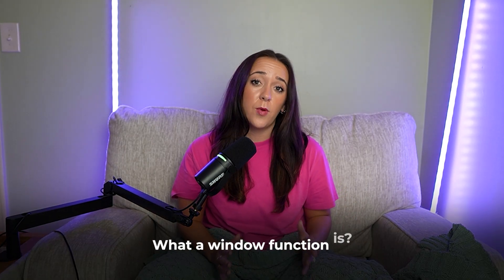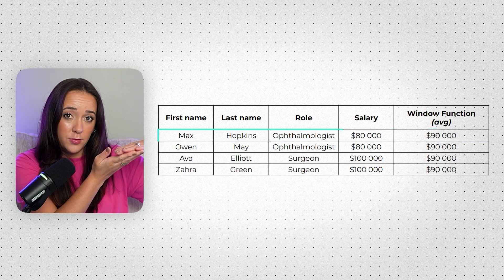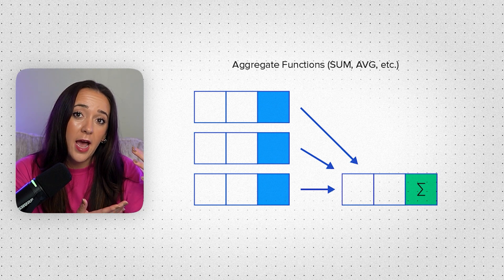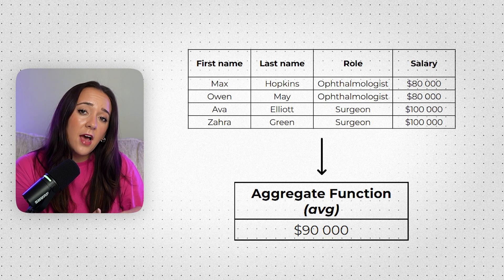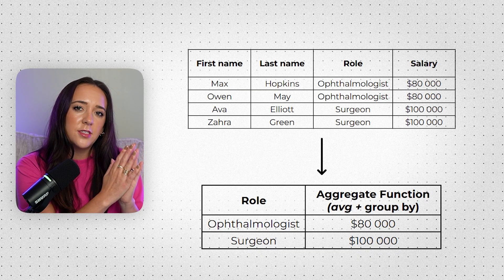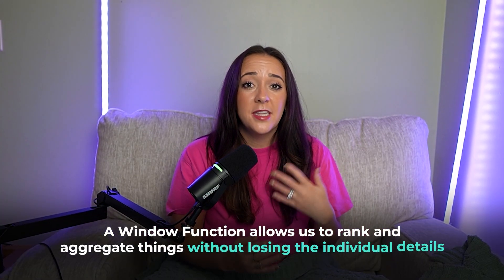Before we get to coding, let's learn what a window function is. A window function in SQL lets you do a calculation across a set of rows related to the current row without collapsing all the rows into one result. Think about aggregate functions in SQL — when we use SUM or AVERAGE, it aggregates all the rows into one output. Even with GROUP BY, we get one number per group. So we lose the detail of every individual row. Window functions solve this limitation because they allow us to rank and aggregate things without losing the individual row detail, keeping row-level detail while still doing calculations — giving us context around how each row compares to its group.